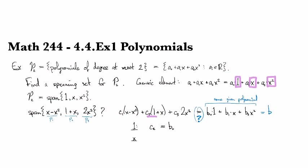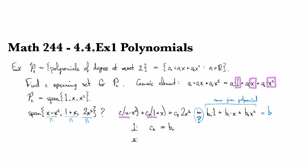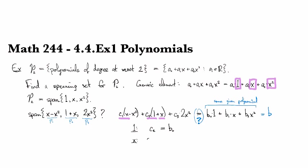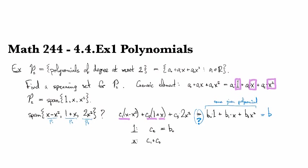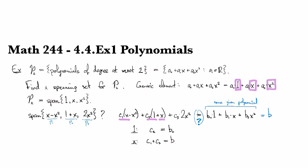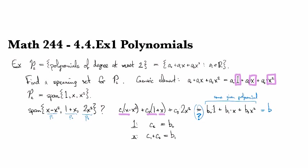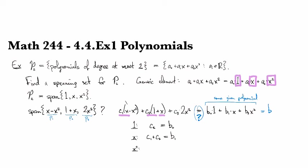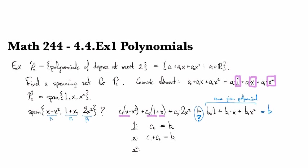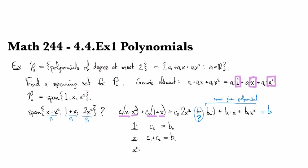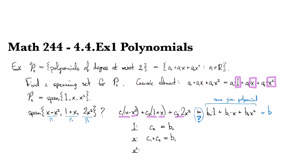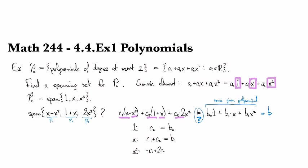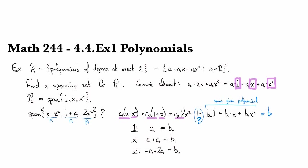Now, if we look at coefficients of x then on the left there's c1 here and there's a c2 of them here. So I have c1 plus c2, and on the right I have b1 copies of x. And then if I look at the coefficients for x squared on the left I have minus one of them here and plus two of them here. So I have minus c1 plus 2c3 and that has to add up to b2.